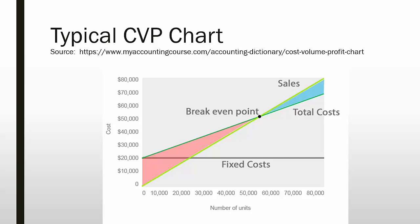Here we have a chart of the typical Cost-Volume-Profit situation. You can see it's easier to tell what your breakeven point is here because the lime green line shows us sales starting at zero going up increasingly the more units you sell. Fixed costs are shown here at $20,000 and are just holding steady.